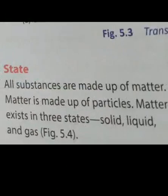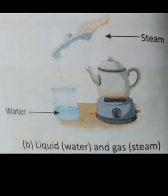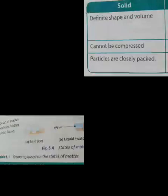All substances are made up of matter and matter is made up of particles. Matter exists in three different states: solid, liquid, and gas. For example, the solid ice, the liquid water, and the gaseous steam. We are going to group matter based on these three states: solid, liquid, and gas.